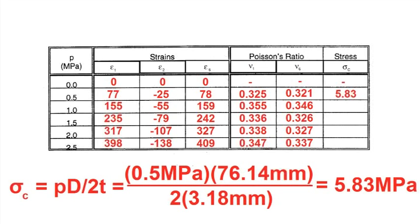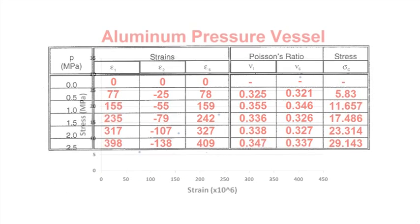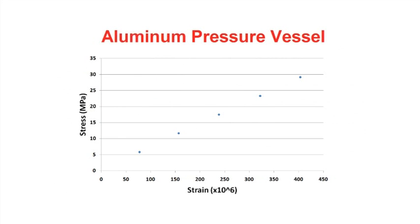Calculate the theoretical circumferential stress. Plot a theoretical stress versus experimental strain graph for locations 1 and 6. The points should be fairly close together. Dividing stress by strain gives us the modulus of elasticity.